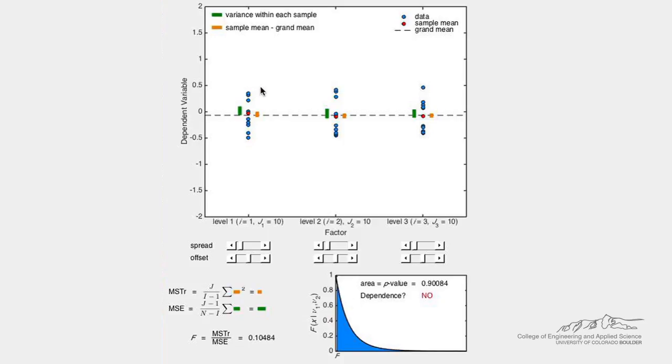We can also change the spread and the offset in each one of these individual experiments, and we can see how that affects the treatment sum of squares, the error sum of squares, the test statistic F, and our p-value.